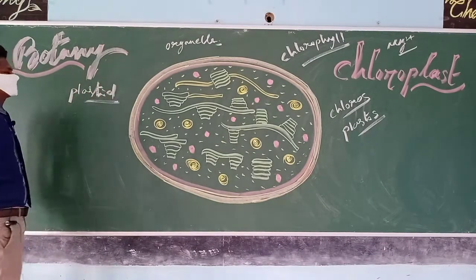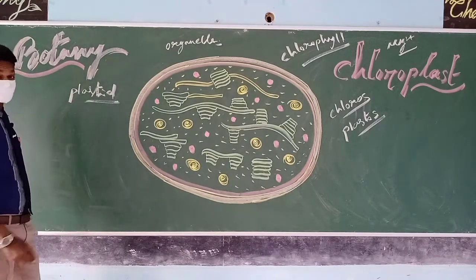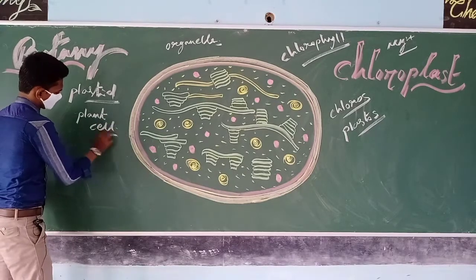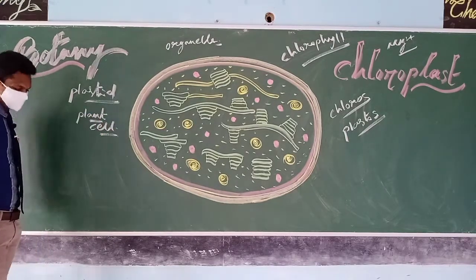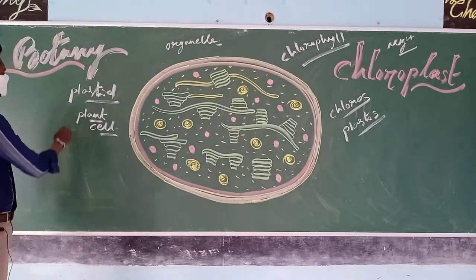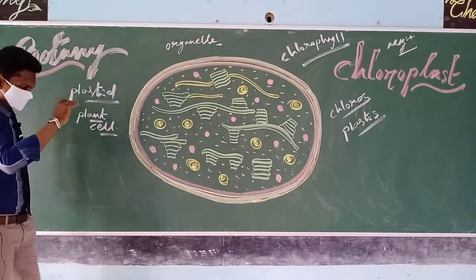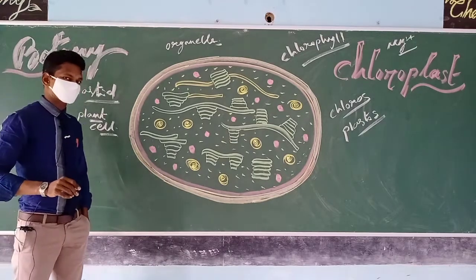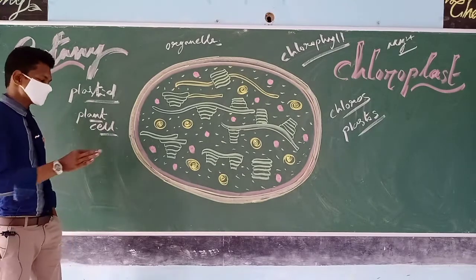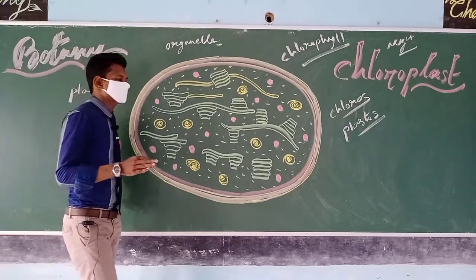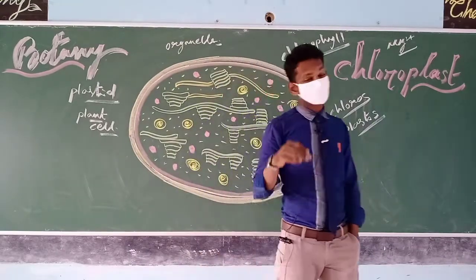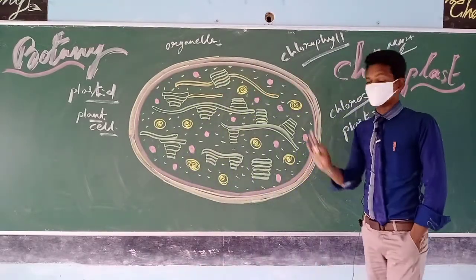Generally, plastids are of three types and are found only in plant cells — in organisms belonging to kingdom Plantae. Plastids may be chromoplasts, leukoplasts, or chloroplasts. Chromoplasts are responsible for the coloring of flowers, petals, corolla, sepals, calyx, fruits, and the entire plant body.